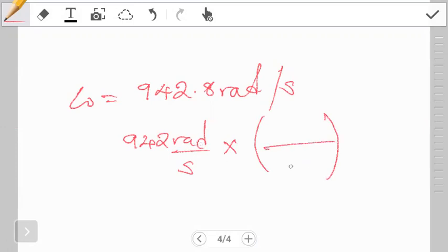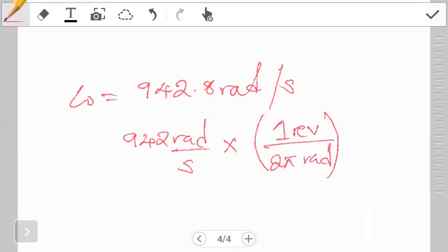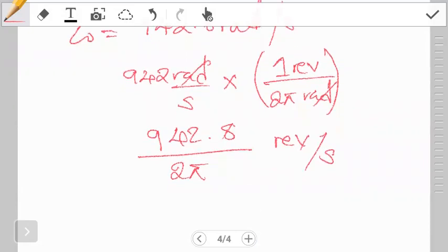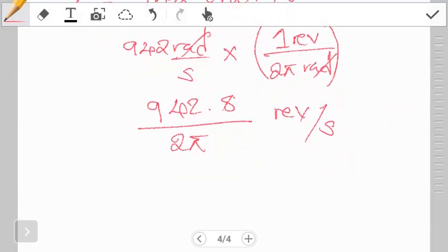My converter, since I want to move from radians, I'm going to have the radians down here, the revolution is going to be up. I know in one revolution I have two pi radians, so this is how I'm going to convert. The radian will cancel out with the radians. It's basically just a division: 942.8 has to be divided by two pi, and then what I get is revolutions per second. When I perform the division to two significant figures, I get 150 revolutions per second.